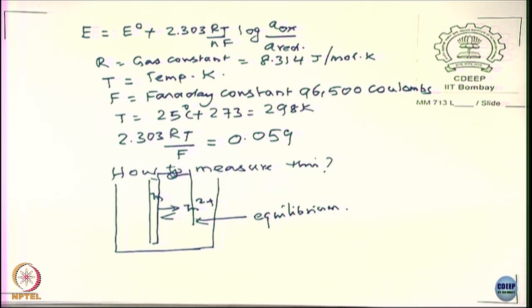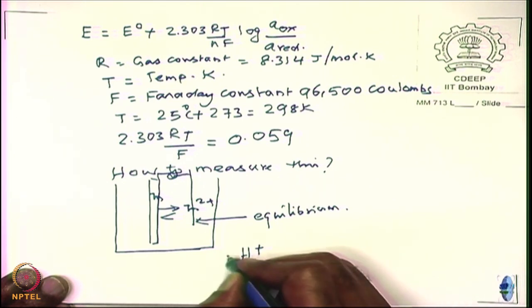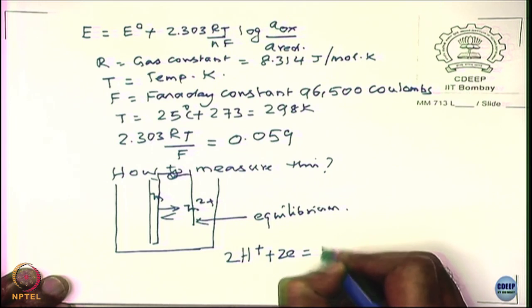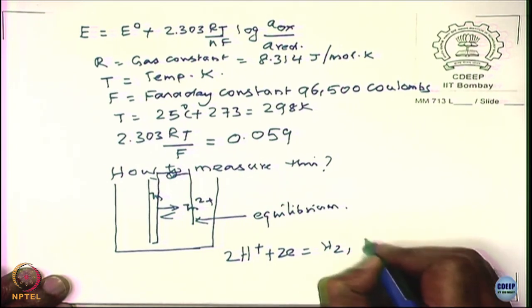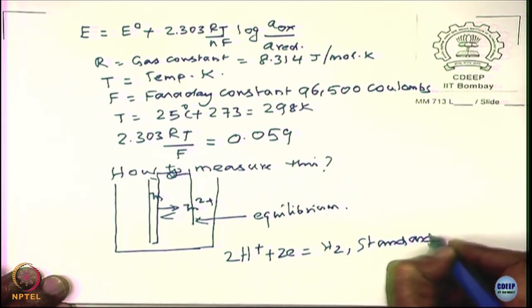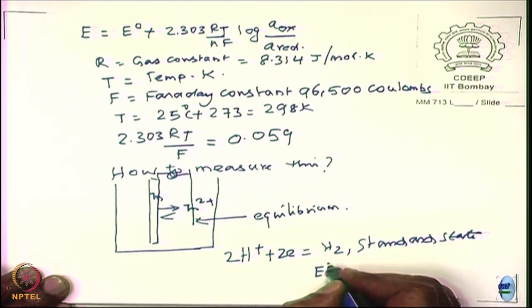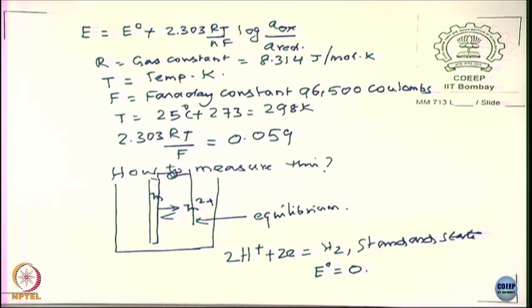So you are going to measure only a potential difference; you cannot actually measure the absolute value. How does one solve the problem? The problem is solved by considering the equilibrium H⁺ + 2e⁻ → H₂ in the standard state. We consider E for that equilibrium as zero, and all potentials measured are in relation to the standard hydrogen electrode. So in relation to hydrogen, you can measure it — you need an electrode which is also in equilibrium.